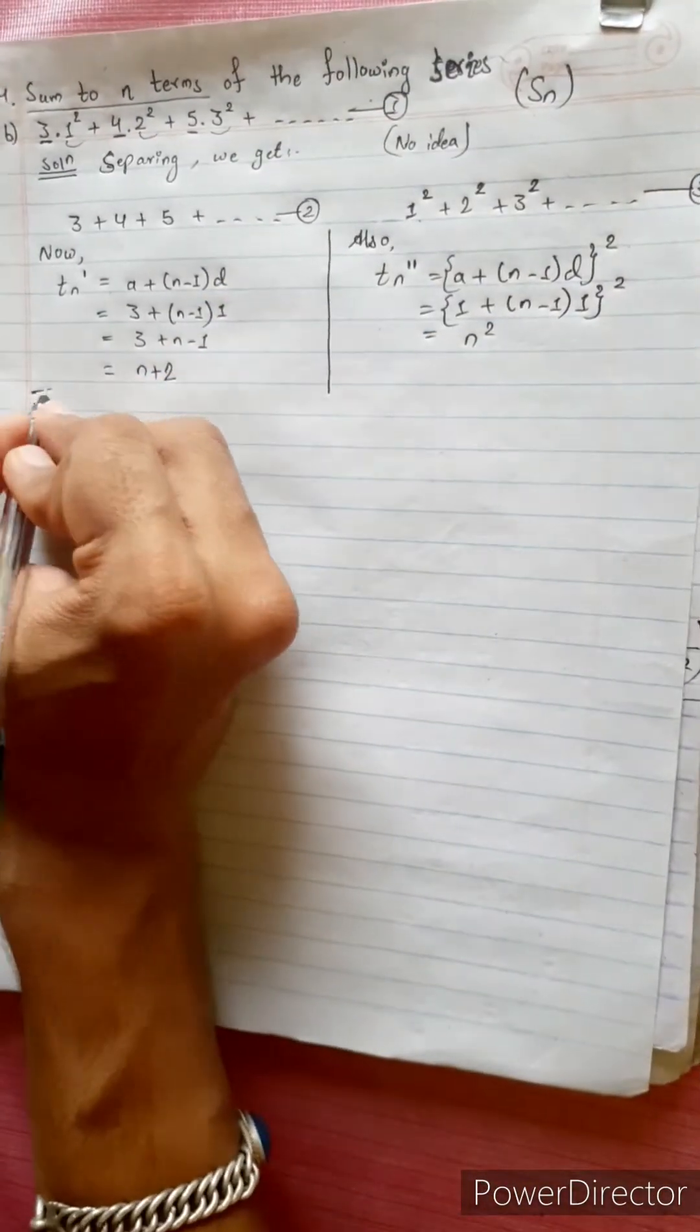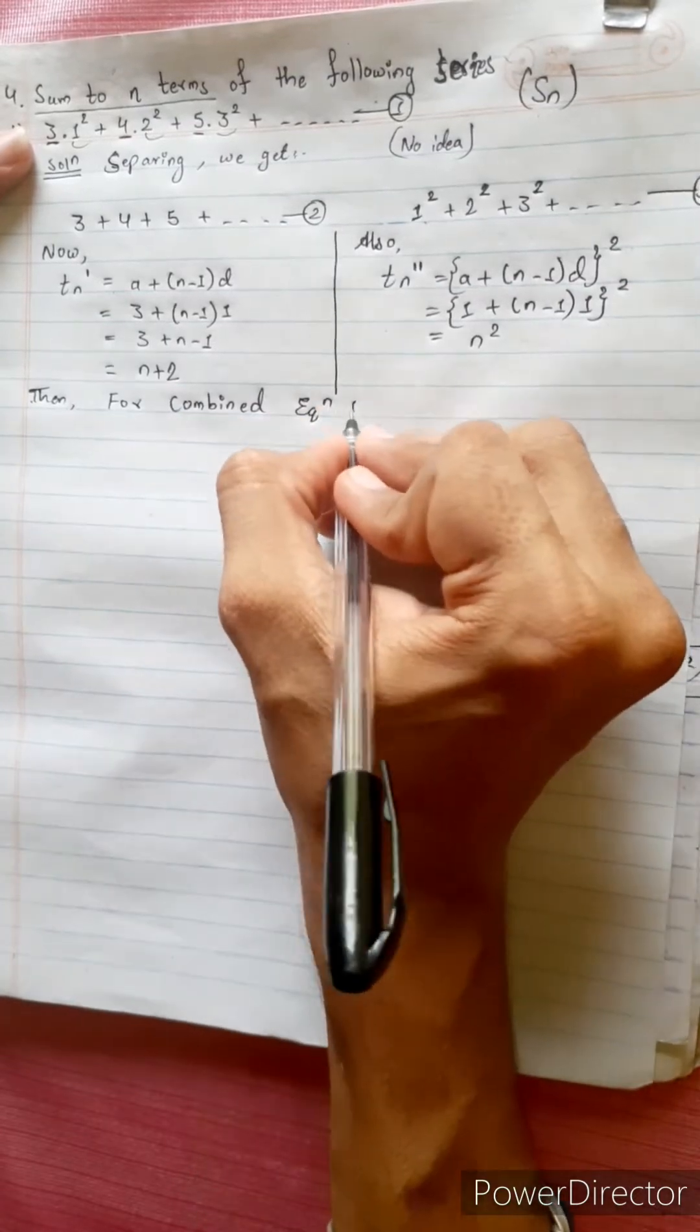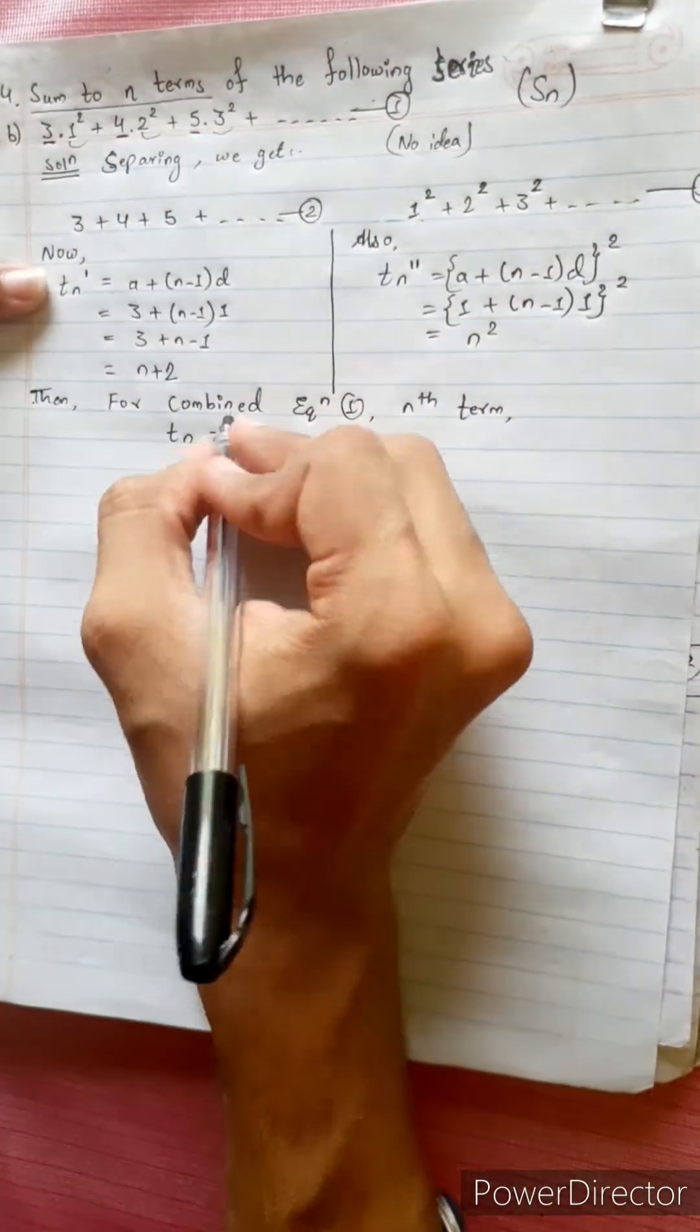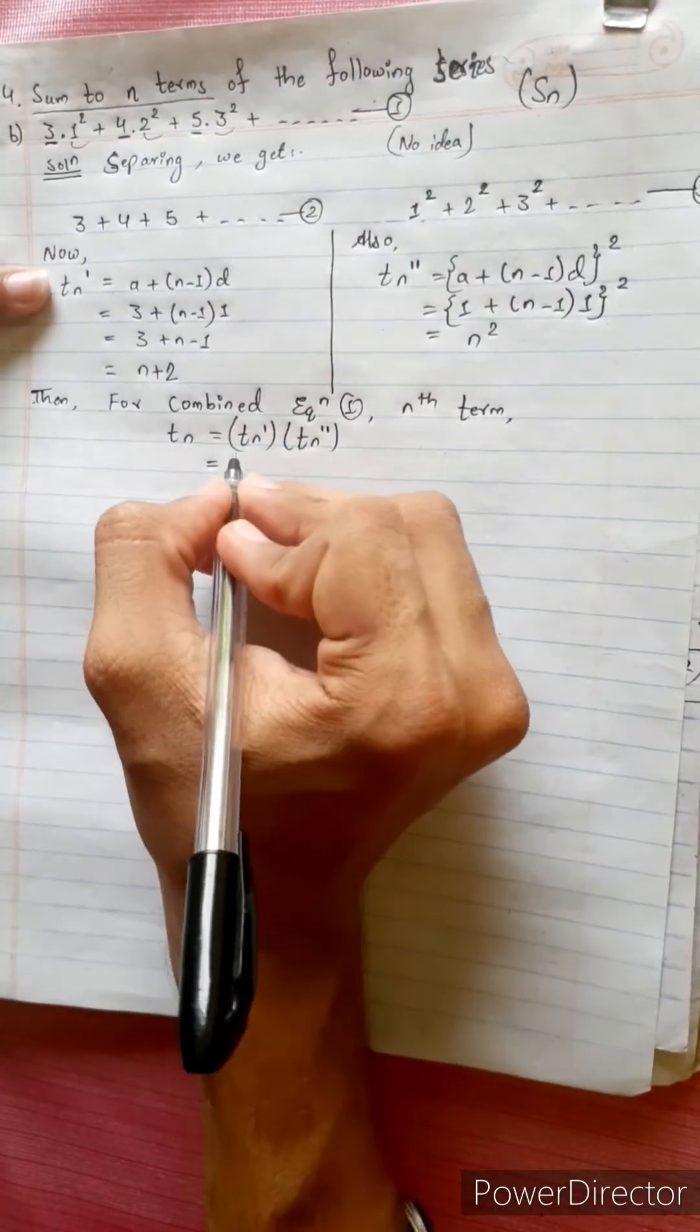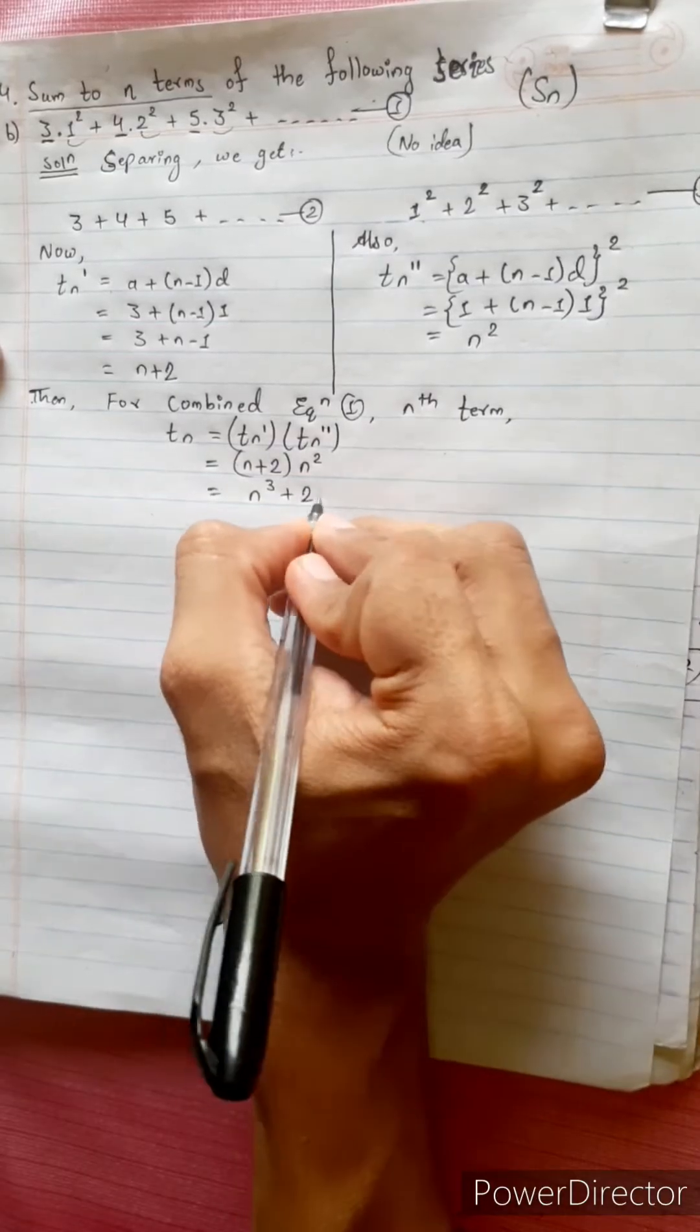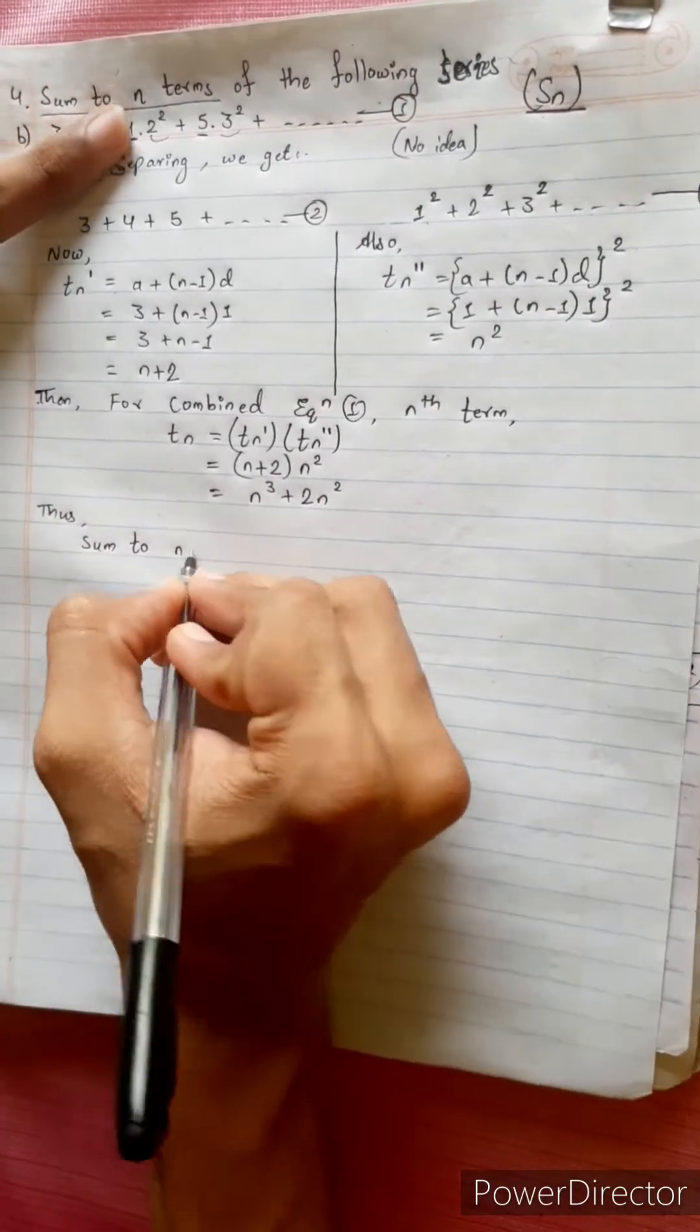Then for combined equation, nth term tn equals tn dash into tn double dash equal to n plus 2 times n square equals n cube plus 2n square. Sum to n terms.